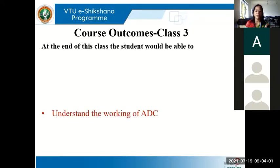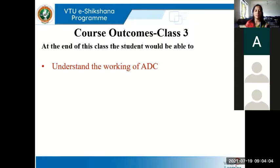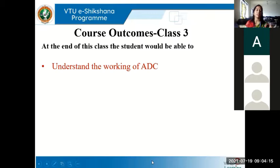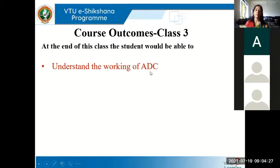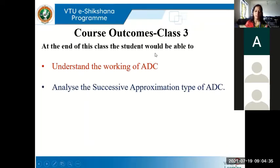In today's class let's talk about analog to digital converters. The first part of any processing is to convert the physically available analog signals. All signals in nature which are available physically are usually analog in nature. So the first step is to convert from analog to digital, which is taken care of by the ADC. We do the processing in digital domain and then convert it back to analog — that part, the DACs, we have already analyzed.